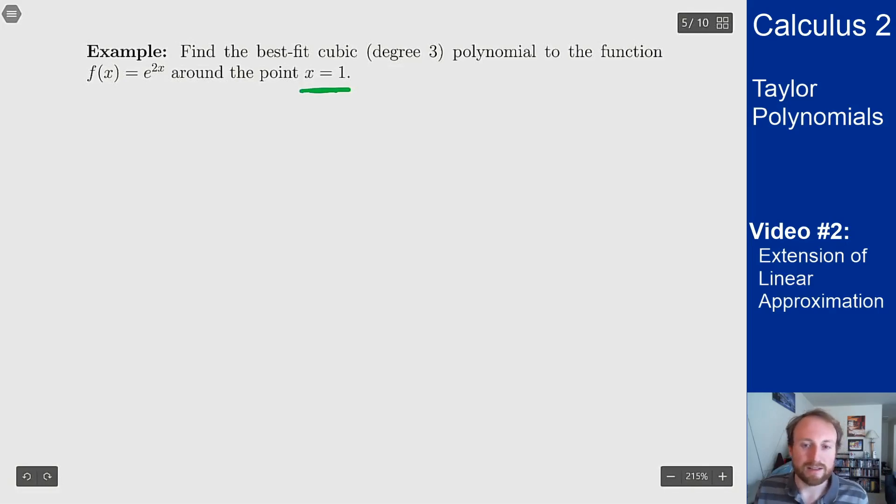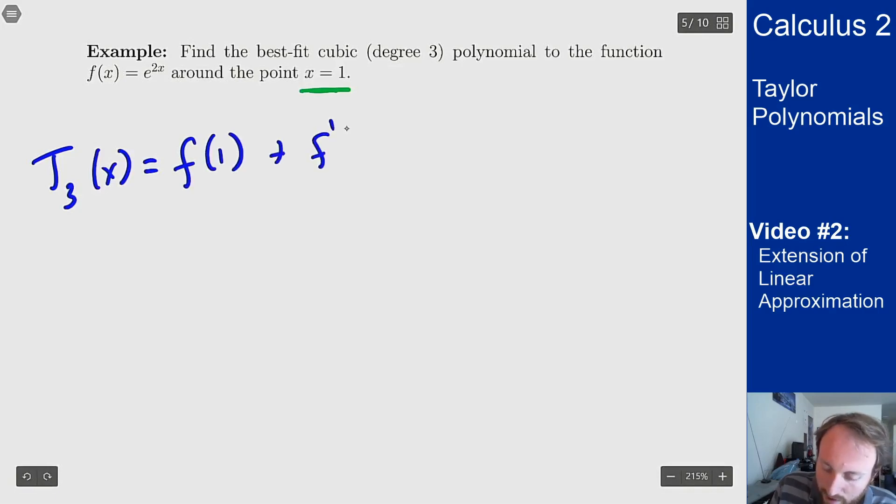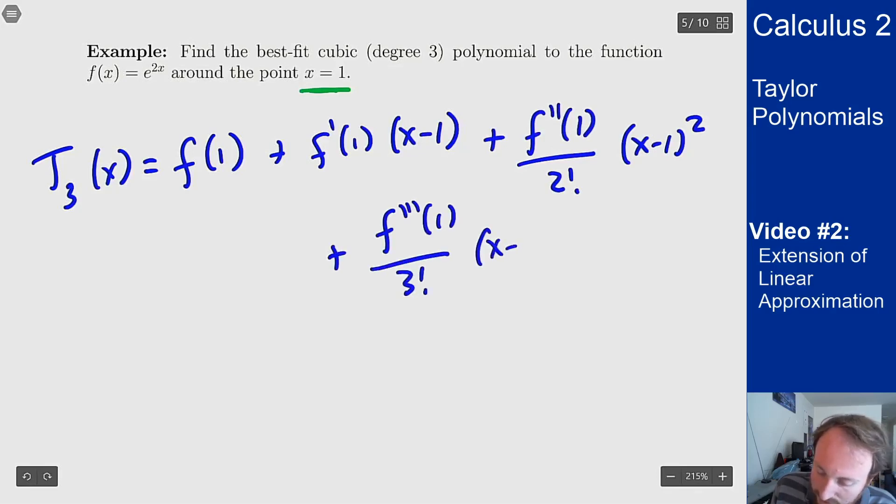The by-hand part is knowing what the formula should look like and plugging it in. T3 of x, centered at 1, should be f(1) plus f'(1) times (x - 1) plus f''(1) over 2 factorial times (x - 1) squared plus f'''(1) over 3 factorial times (x - 1) cubed.